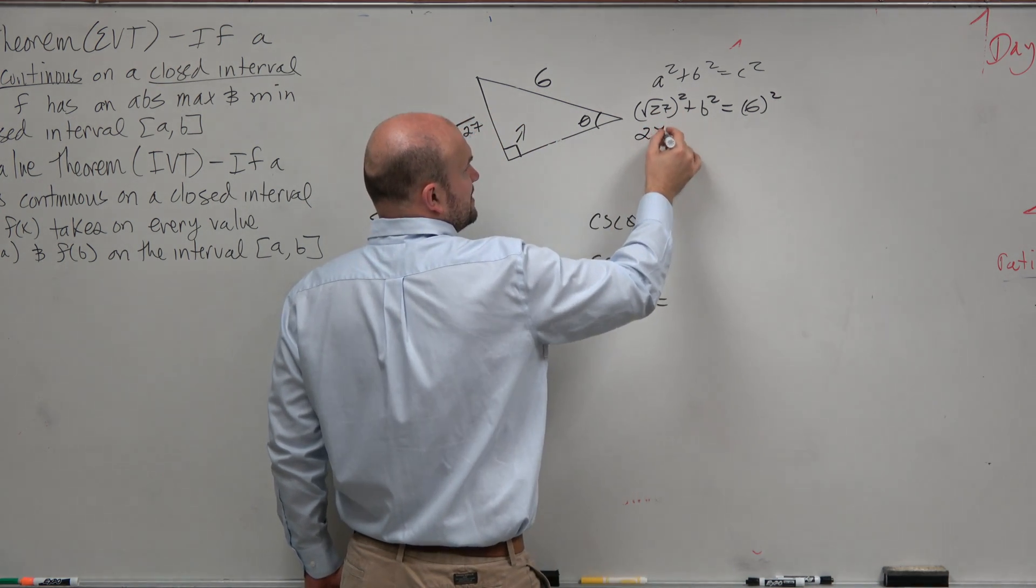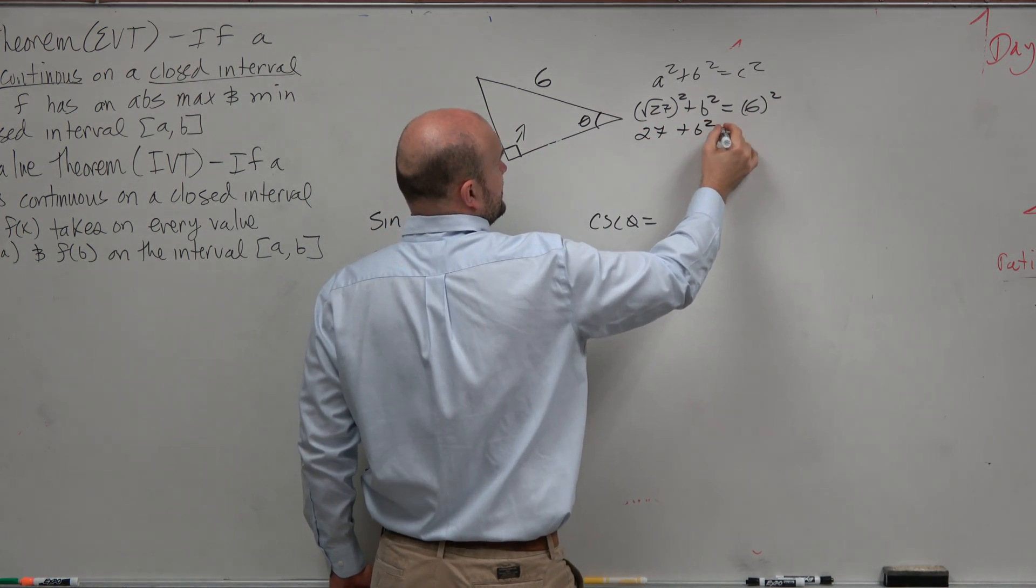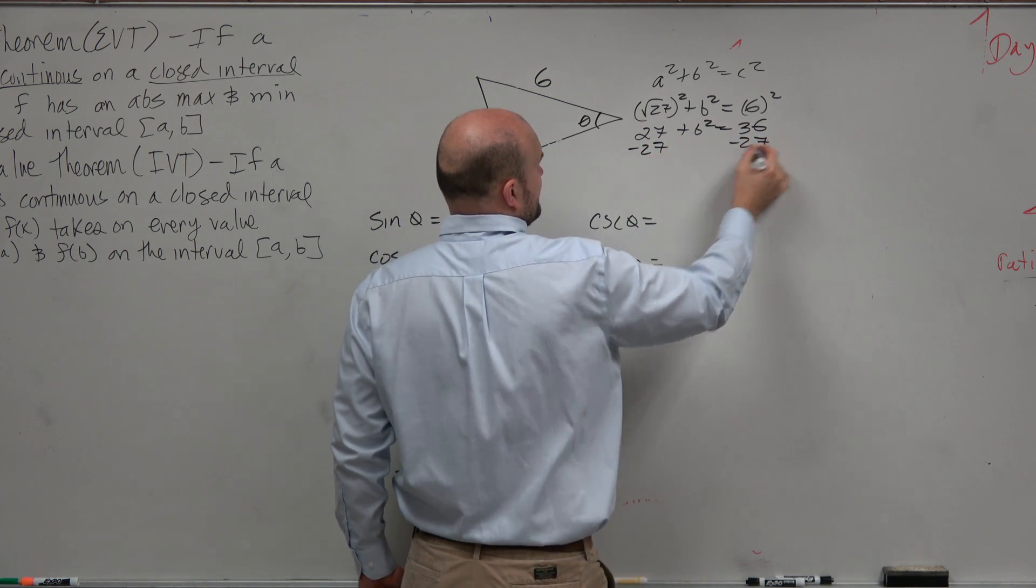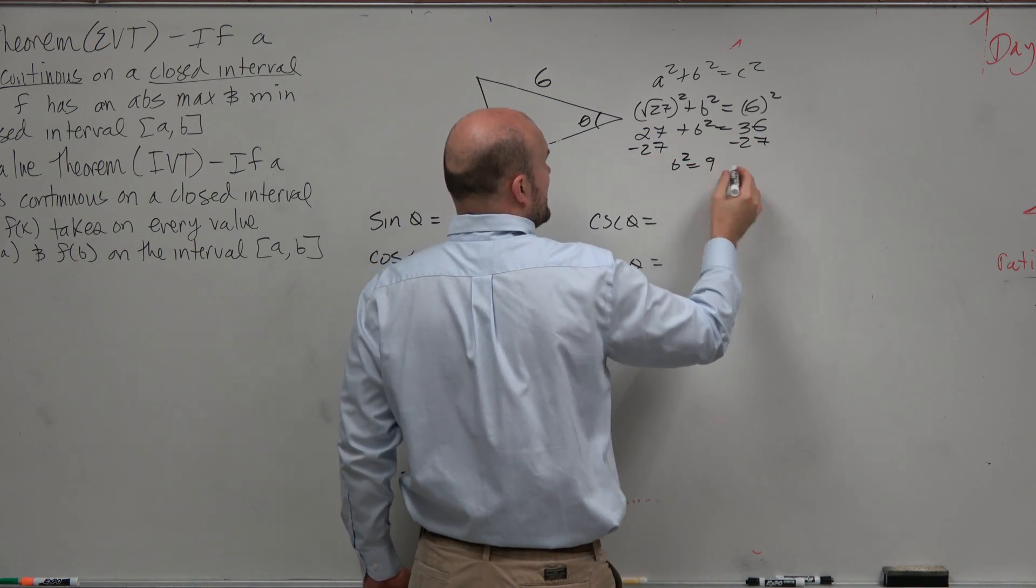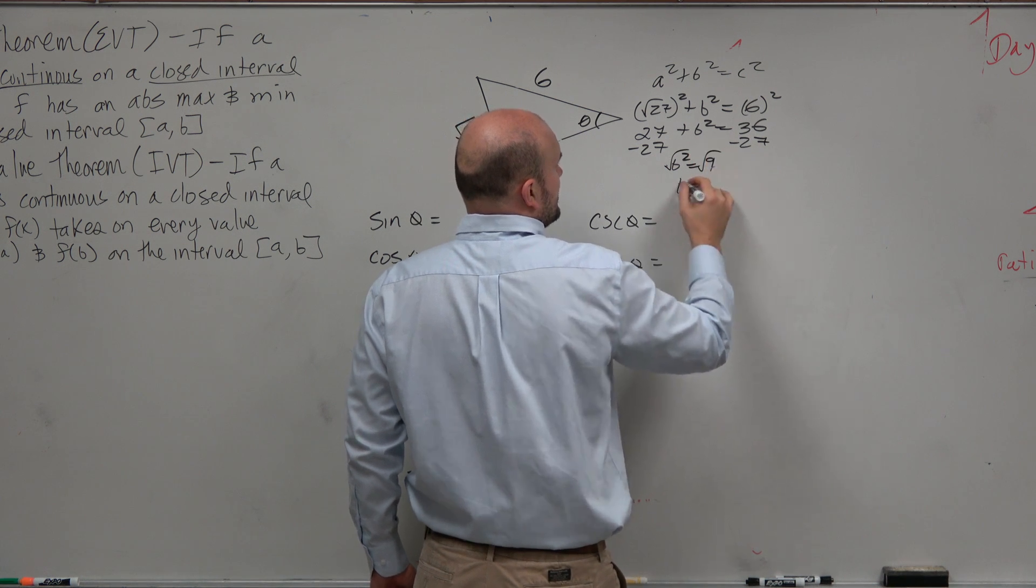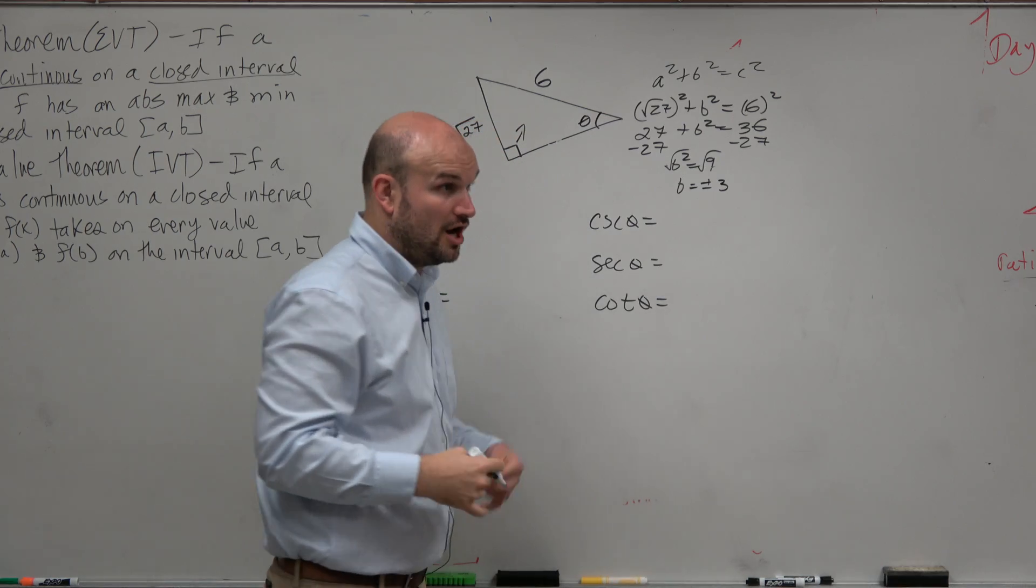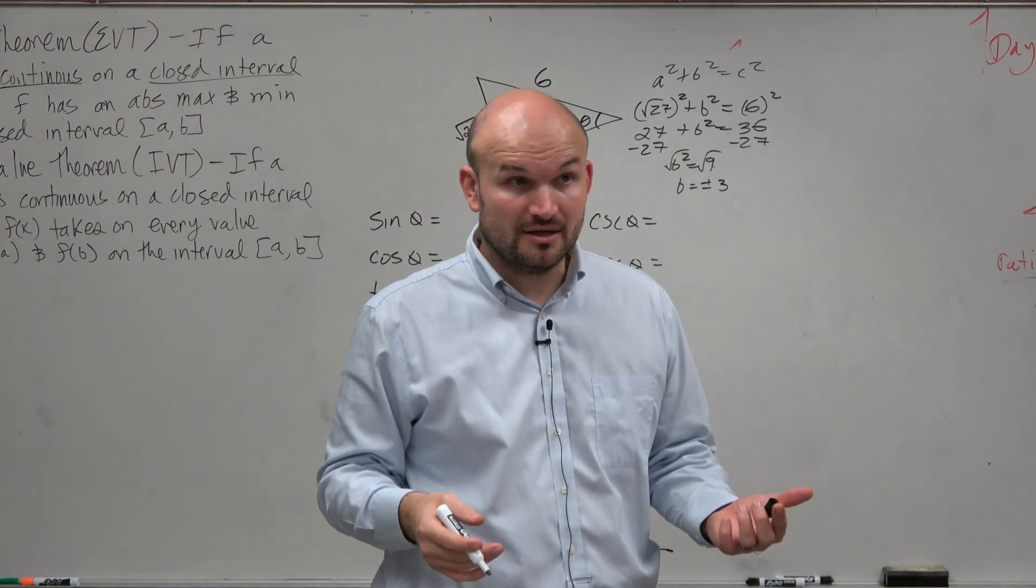Square root of 27 squared is just 27 plus b squared equals 36. Subtract 27, subtract 27. b squared equals 9. Square root, square root. b equals plus or minus 3. Always have to include plus or minus. Won't you guys agree?